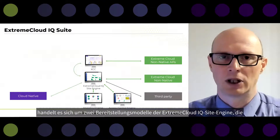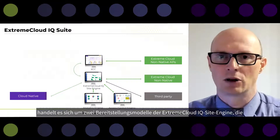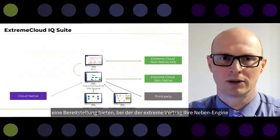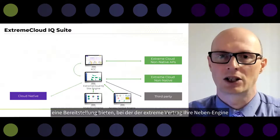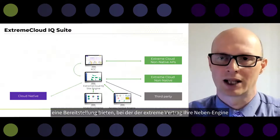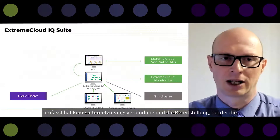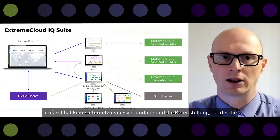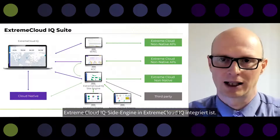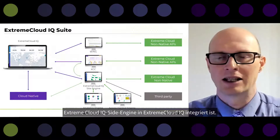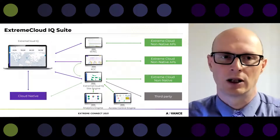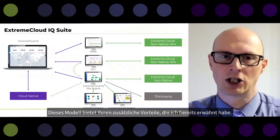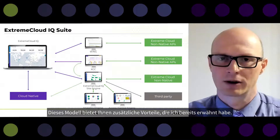From an architecture point of view, there are two deployment models of Xtreme CloudIQ site engine: an air-gap deployment where the site engine does not have internet access connectivity, and a deployment where the Xtreme CloudIQ site engine is integrated with Xtreme CloudIQ, which gives you the additional benefits already mentioned.